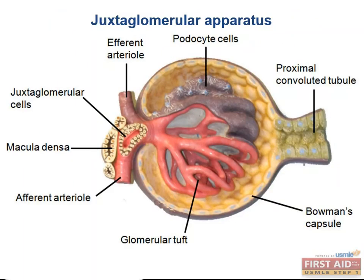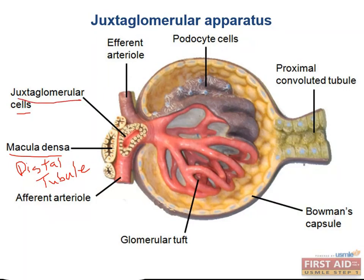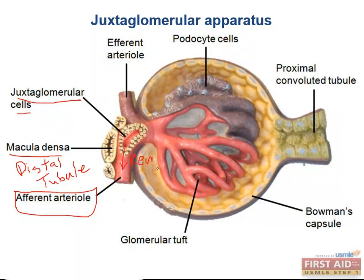Let's briefly talk about the juxtaglomerular apparatus. This collection of cells serves as a sensor and feedback system to maintain blood pressure. The macula densa cells detect the concentration of sodium in the filtrate in the distal tubule, while the JG cells sense blood pressure in the afferent arteriole. Reduced blood pressure leads to reduced sodium delivery to the distal tubule, so both cell types are ultimately detecting the same thing — the blood pressure of the body — and the JG cells will release renin when activated.